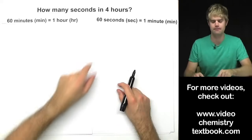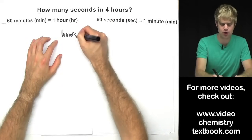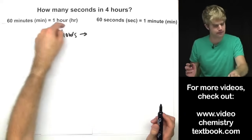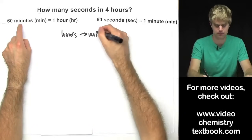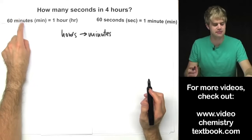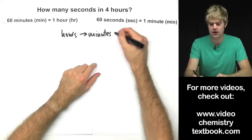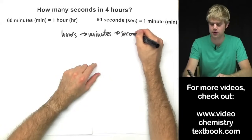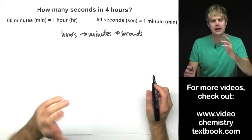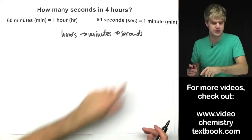Here's our plan of attack. We're starting with hours, so we can go from hours to minutes based on the given information. And then after we have an answer in minutes, we can take that and convert to seconds. Let's look at how we do this in two different steps.